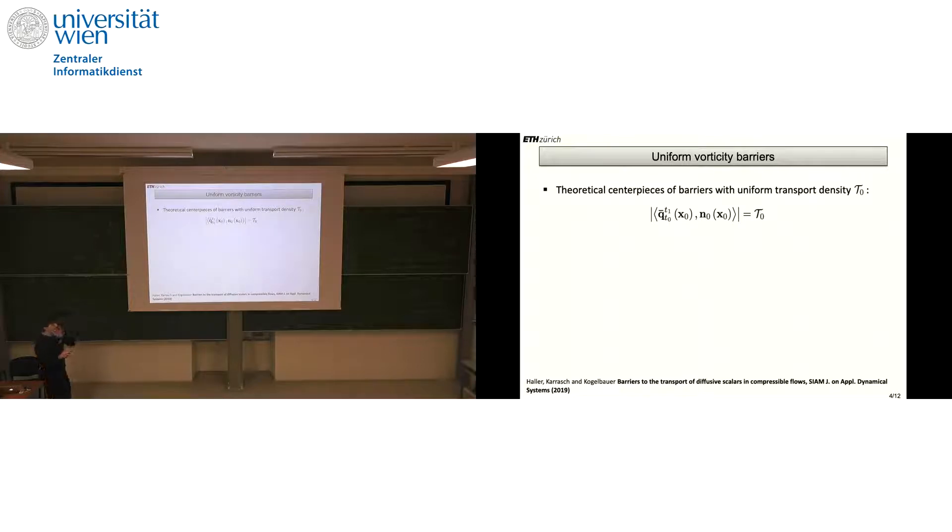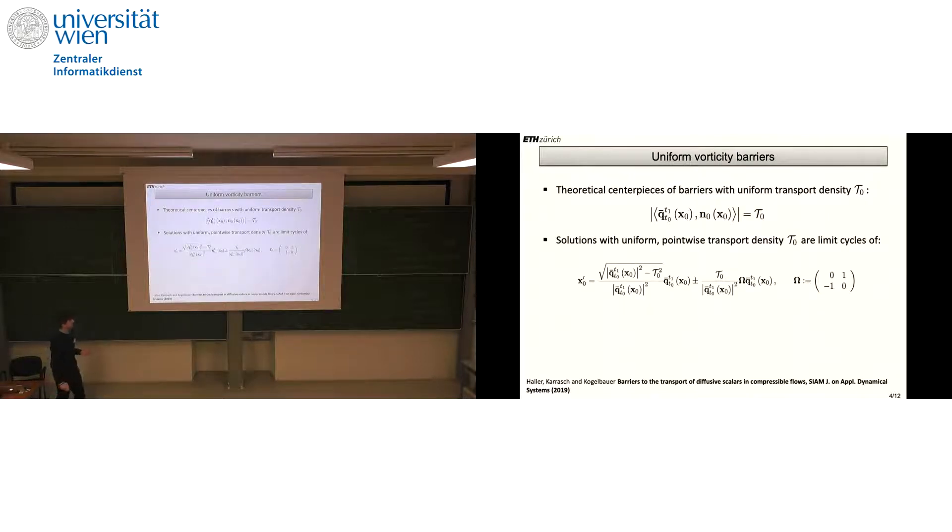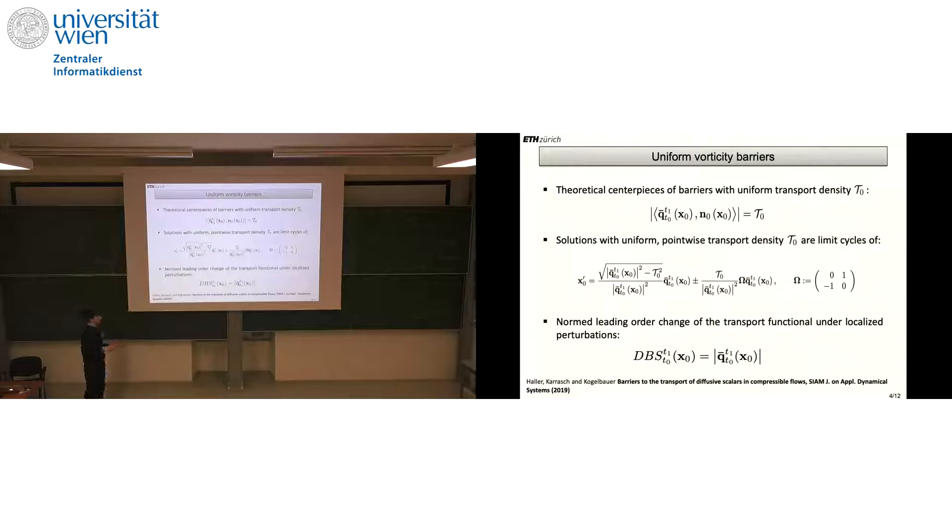As shown in this paper, the most observed class of solutions to this variational problem is given by this conservation law. Here T_av denotes the uniform transport density along the yet unknown material curve. One can look for solutions as limit cycles of this vector field, which is a linear combination between Q and a vector field perpendicular to Q.